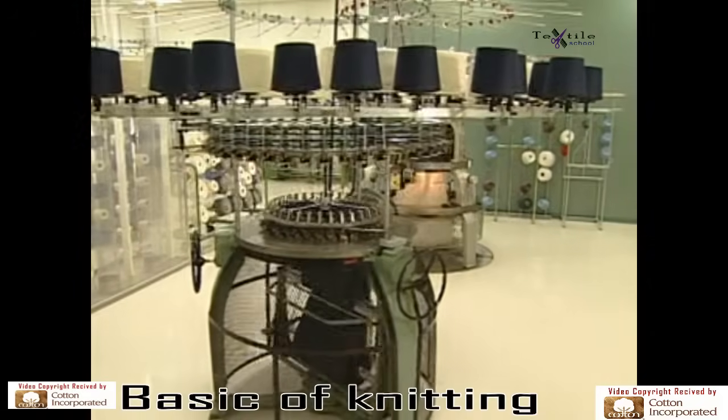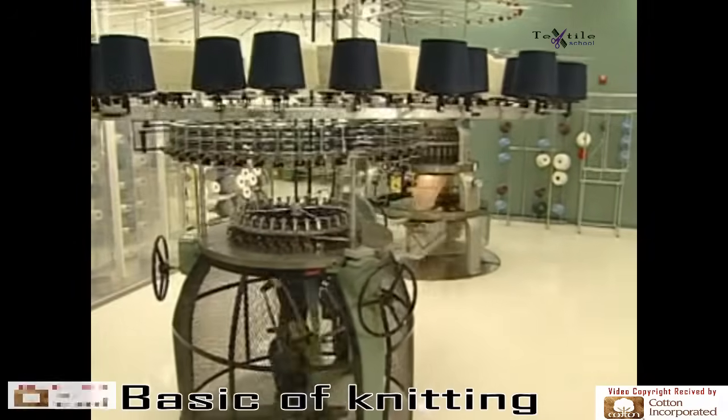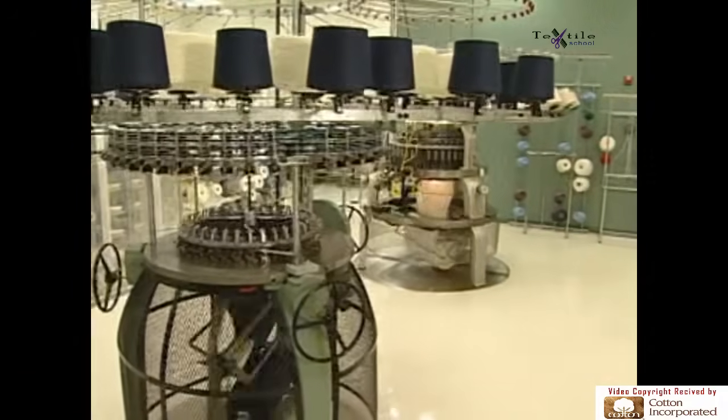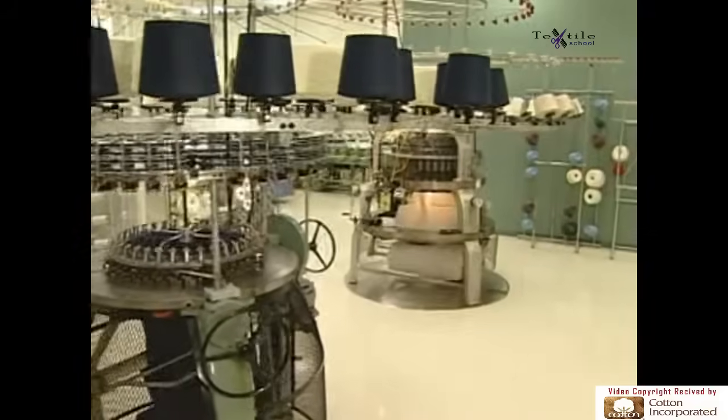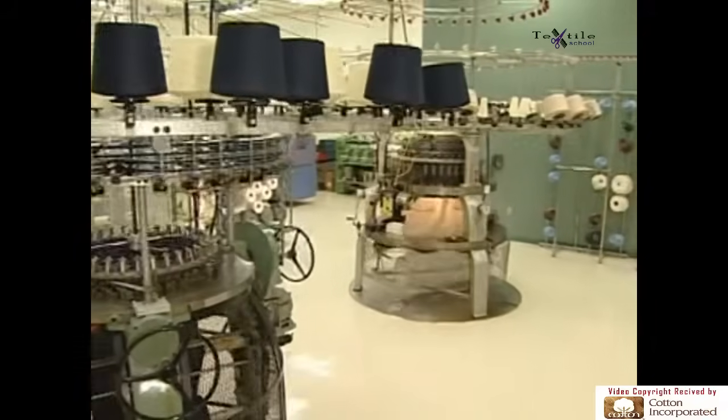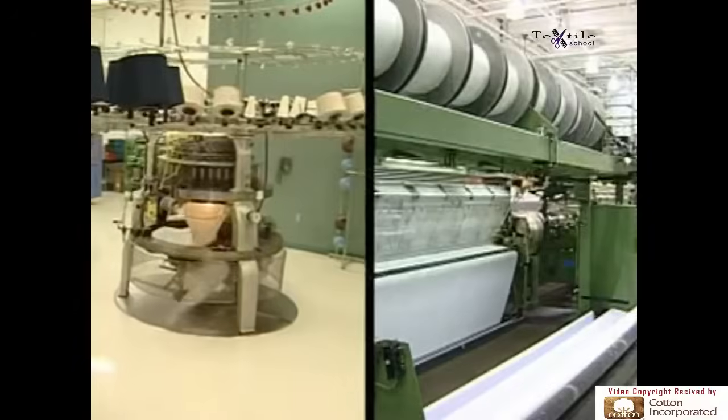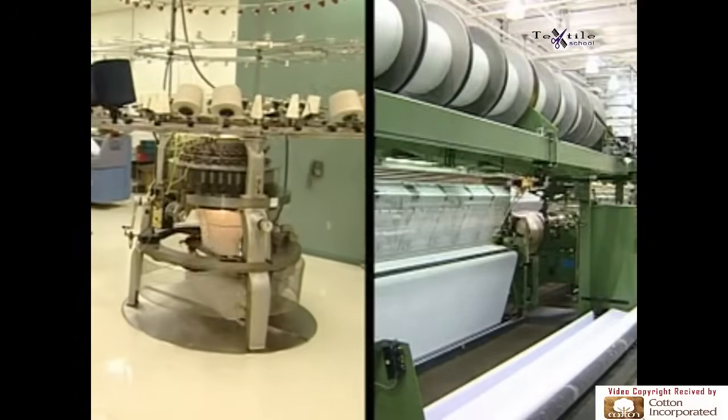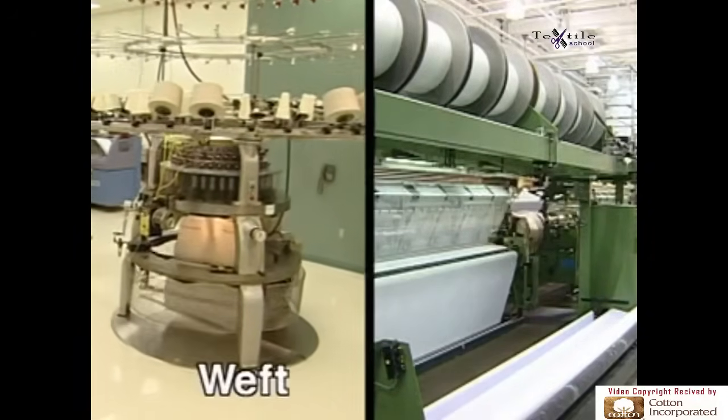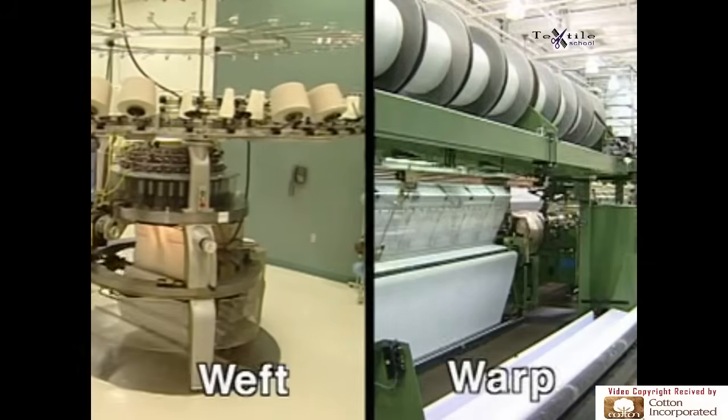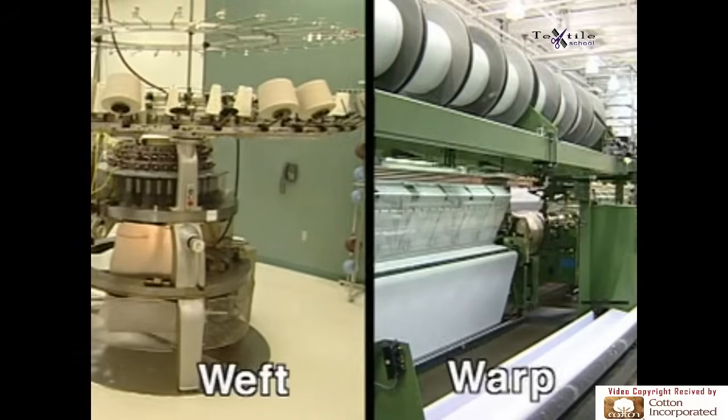Knitting is defined as the intermeshing of yarn into loops to form fabric. There are different ways that yarn can be subjected to the needles for fabric formation. In knitting, there are basically two systems: weft and warp. What makes them different? Let's take a close look at each one.